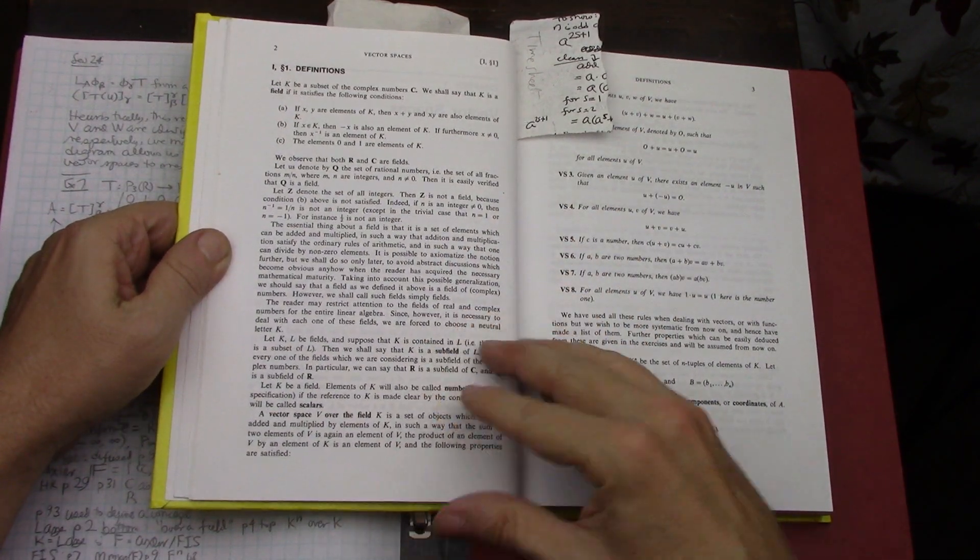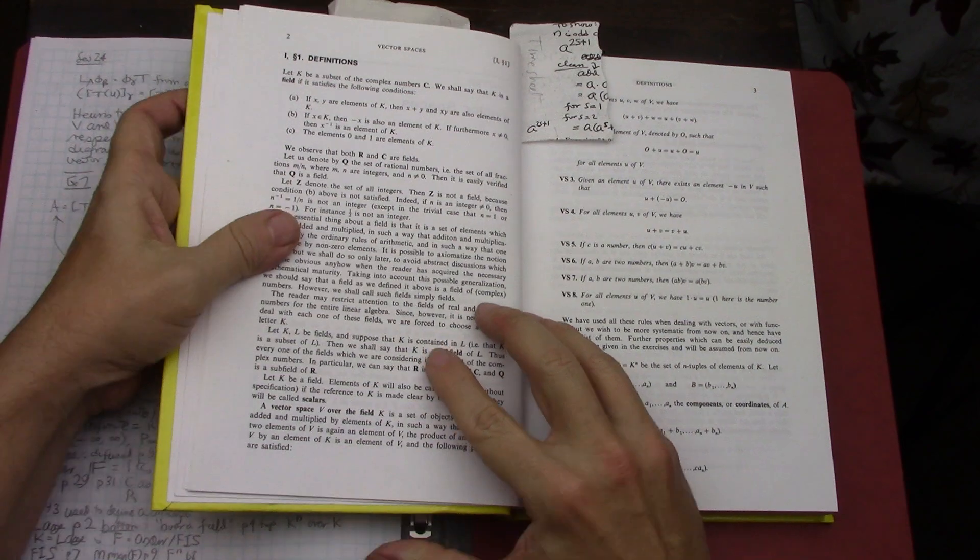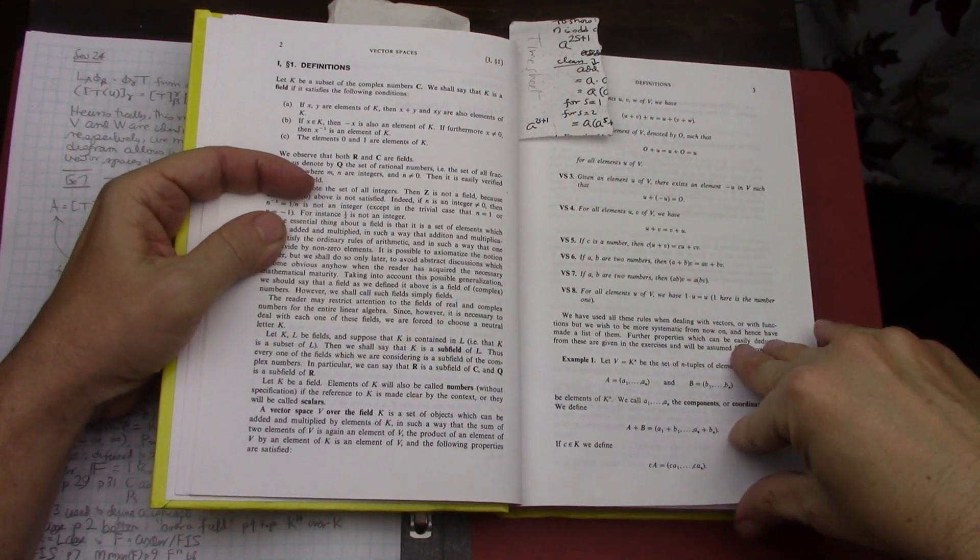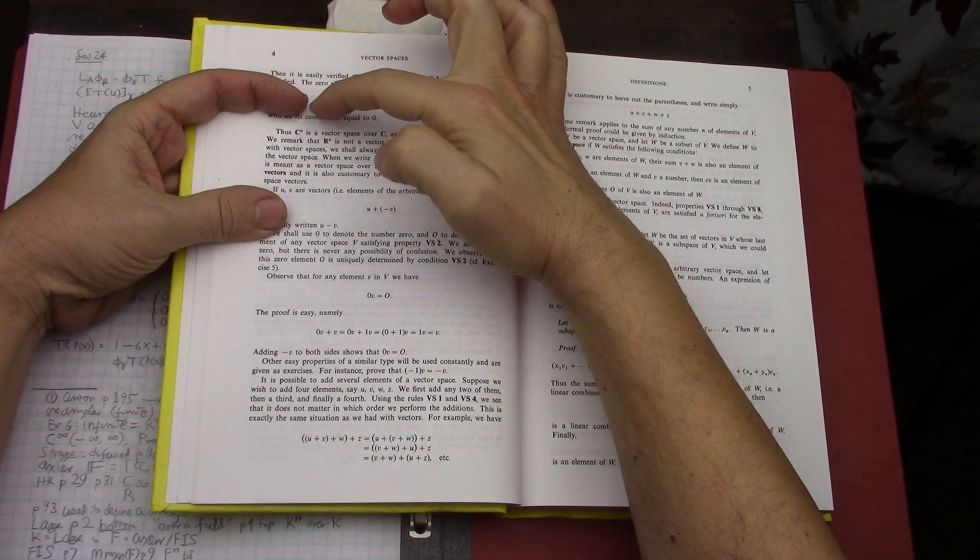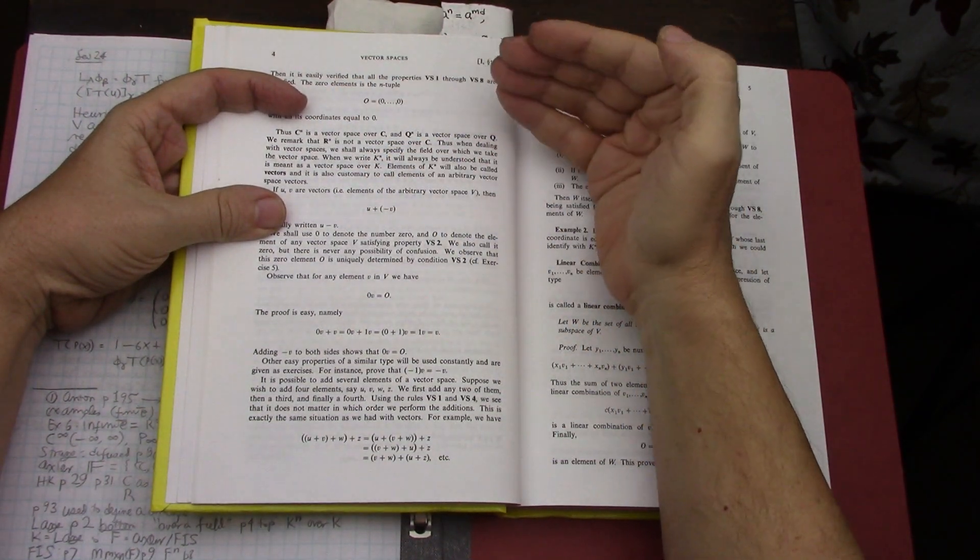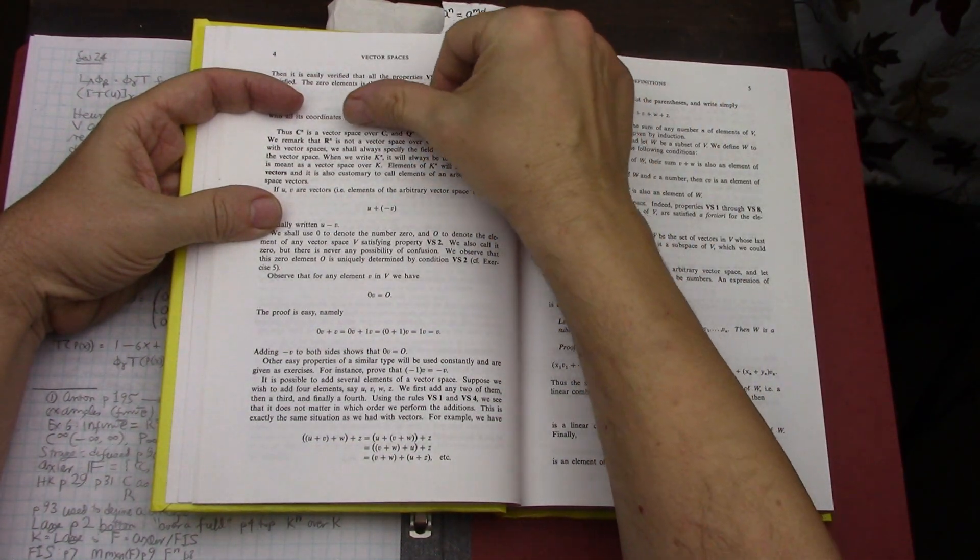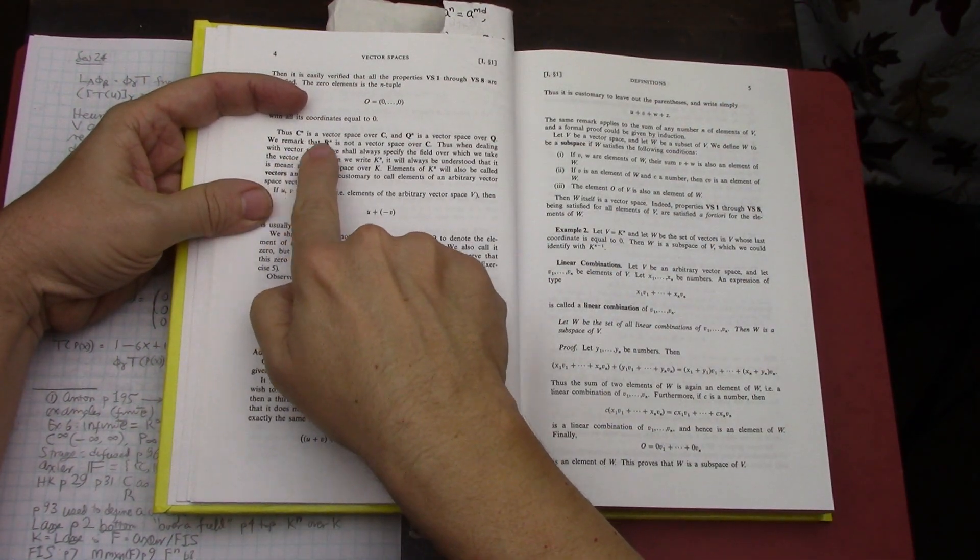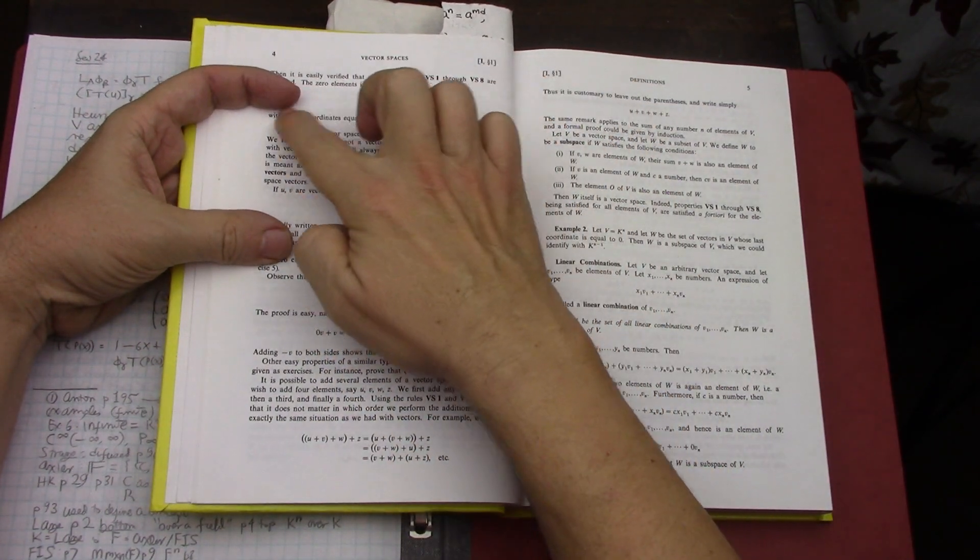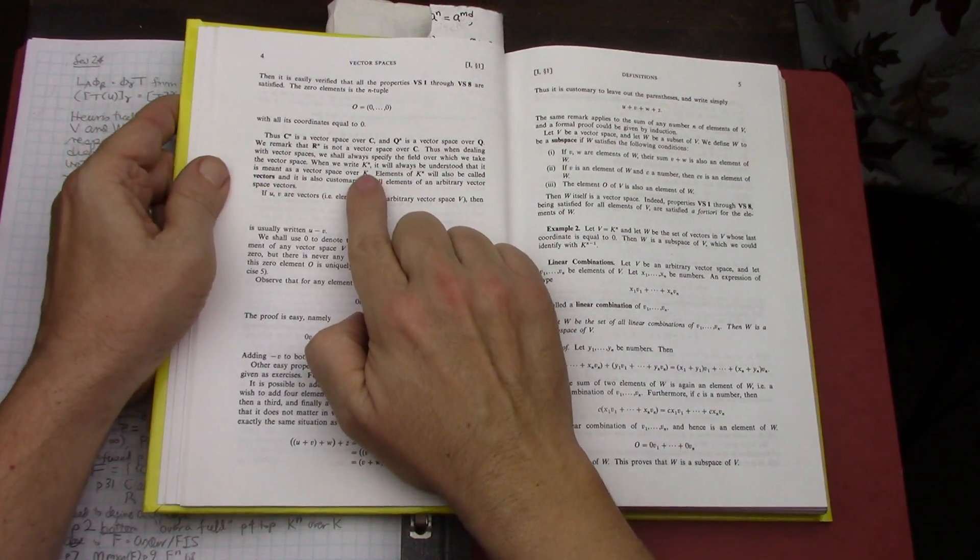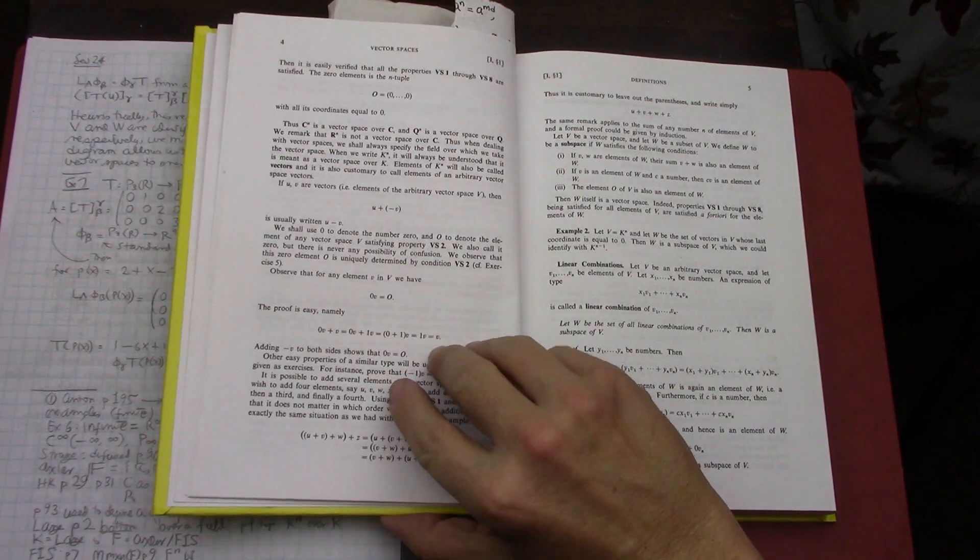Another thing that I really like about Lang, you see it's on page 4 right here at the very beginning, is how he lays out how it's implicit that when you say R square, it's over R most of the time. So really, thus he says C to the N is a vector space over C, Q to the N is a vector space over Q, and in the case of Lang, the F of Axler is the K of Lang.